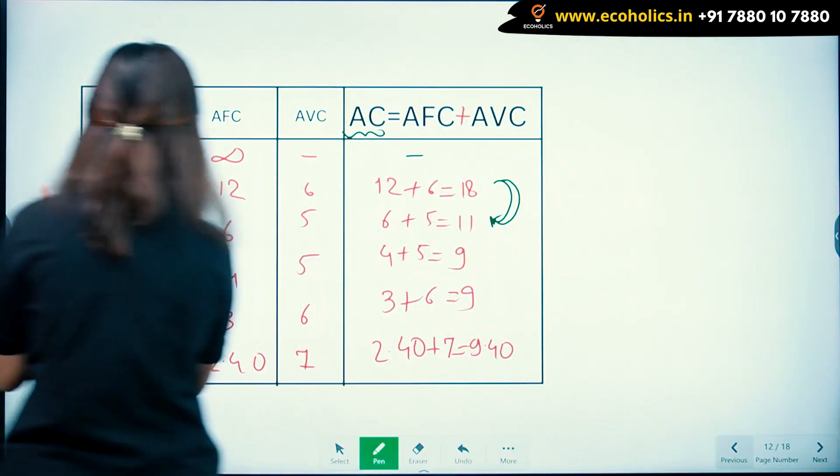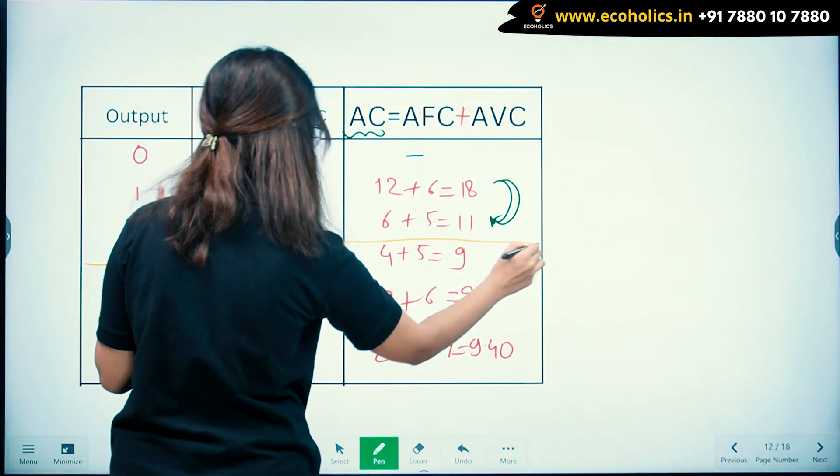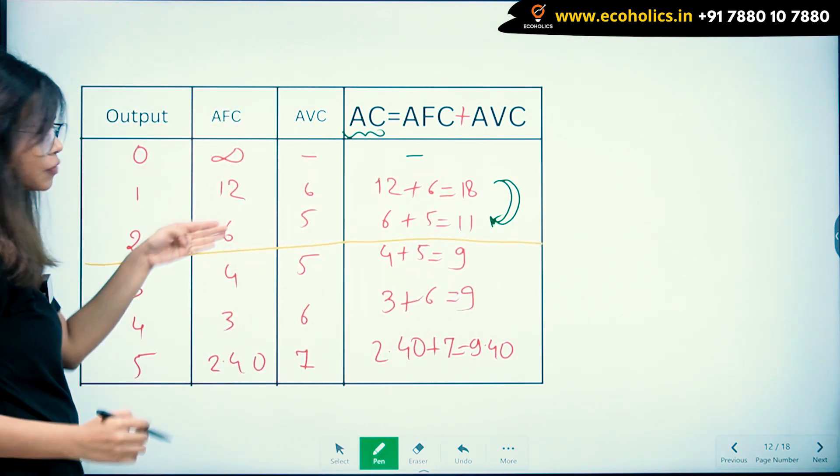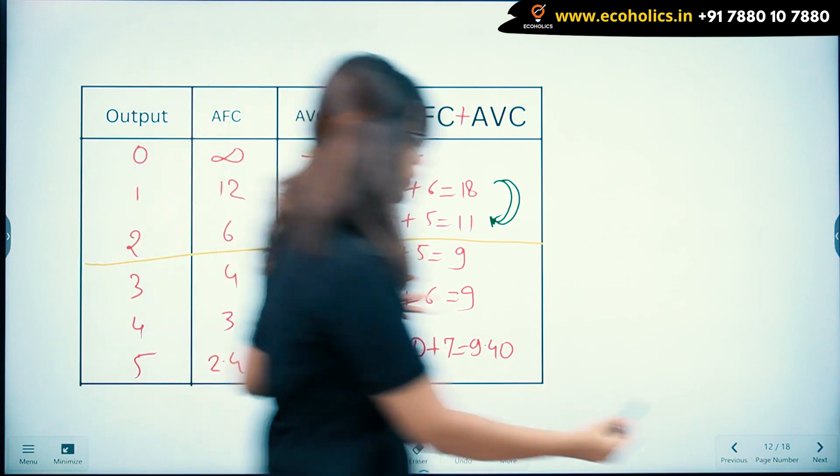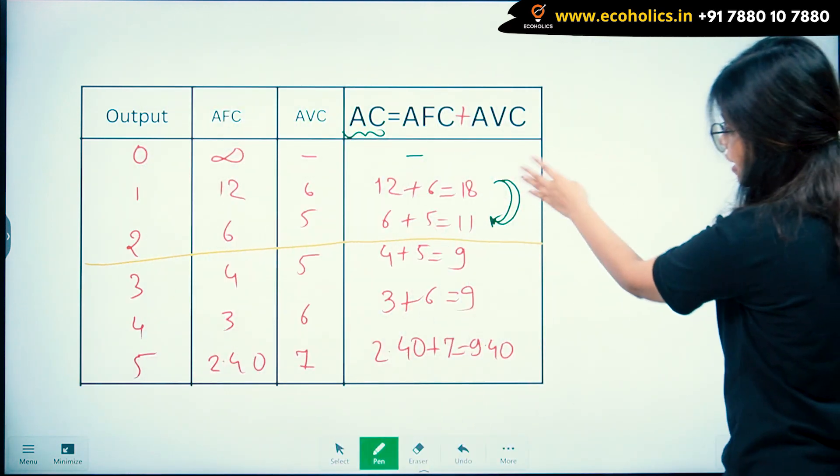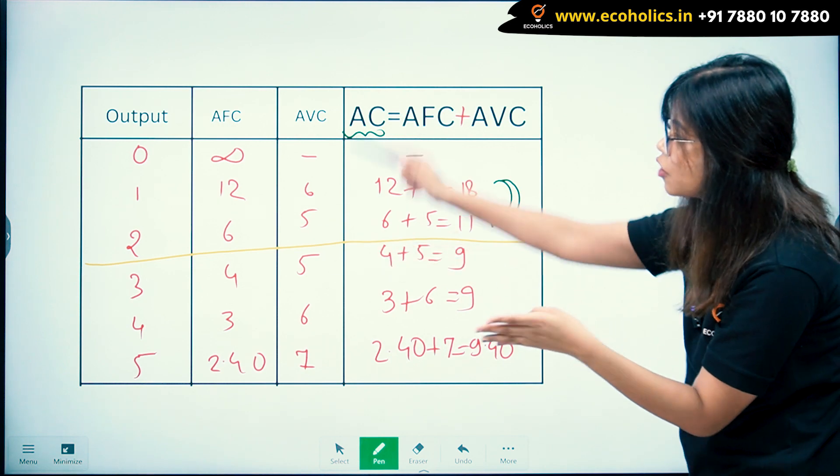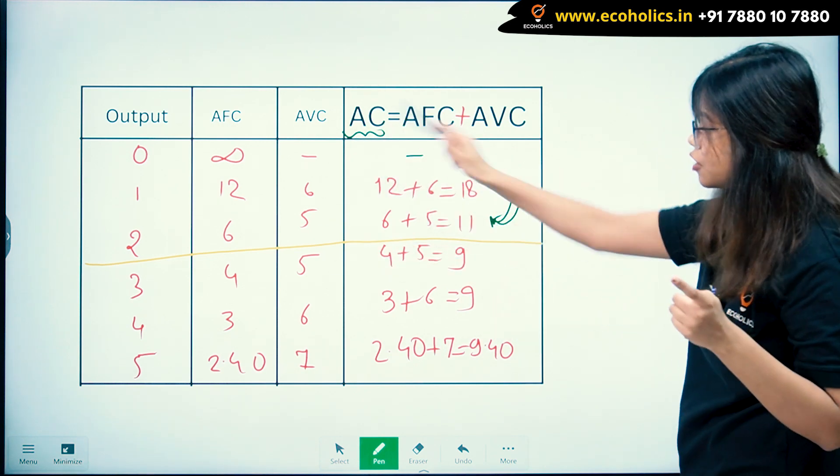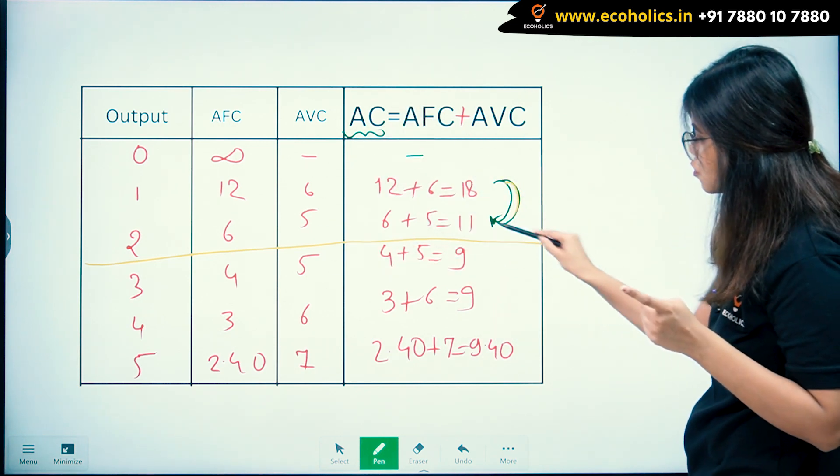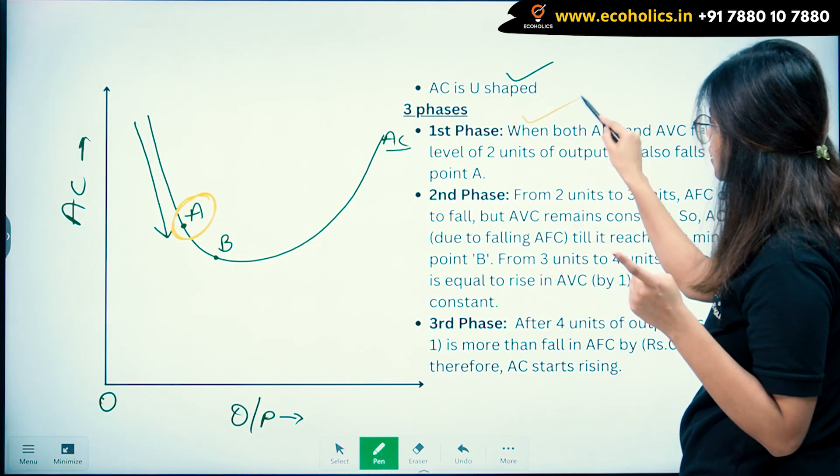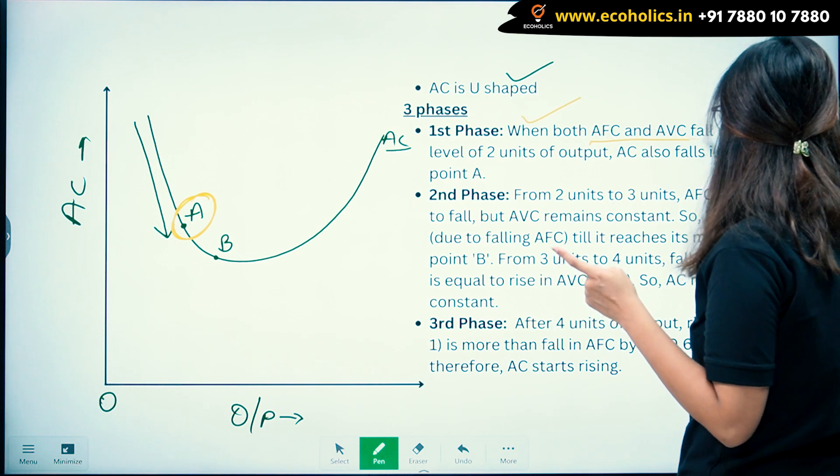Till two units of output, your AFC is falling - 12 to 6. AVC is falling - 6 to 5. So your AC is also falling - 18 to 11. This is the first phase where everything is falling. Both AFC and AVC fall, so AC is also falling.